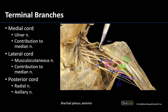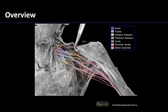To summarize the terminal branches: from the medial cord you have the ulnar nerve and a contribution to the median nerve; from the lateral cord you have a contribution to the median nerve as well as the musculocutaneous nerve; and from the posterior cord you have the axillary nerve and the radial nerve. I highly recommend taking this color-coded image and trying to label the trunks — superior, middle, inferior — the cords, and the terminal branches. Labeled versions are also available on the Blue Link website to check your work.